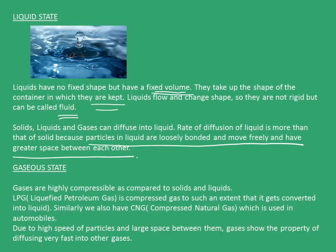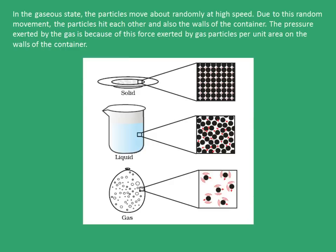The third one is the gaseous state. Gas is highly compressible compared to solids and liquids. The LPG cylinders we use at home contain liquefied petroleum gas — gas compressed to such an extent that it gets converted into liquid. Similarly, we have CNG, compressed natural gas, used in automobiles and industries. Due to high speed of particles and large space between them, gases diffuse very fast into other gases. In the gaseous state, particles move randomly at high speed, hitting each other and the walls of the container. The pressure exerted by the gas is due to this force exerted by gas particles per unit area on the walls of the container.